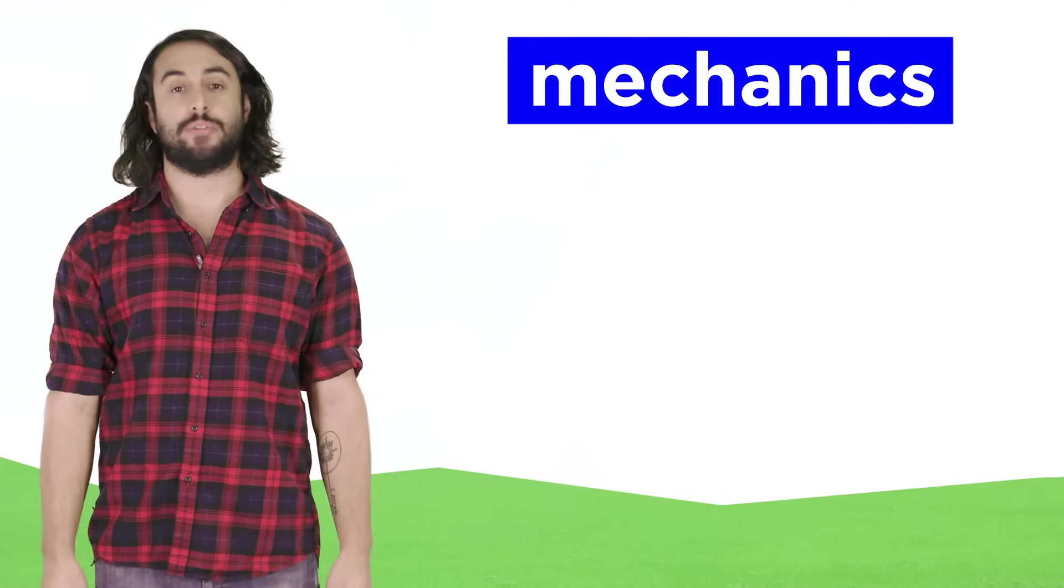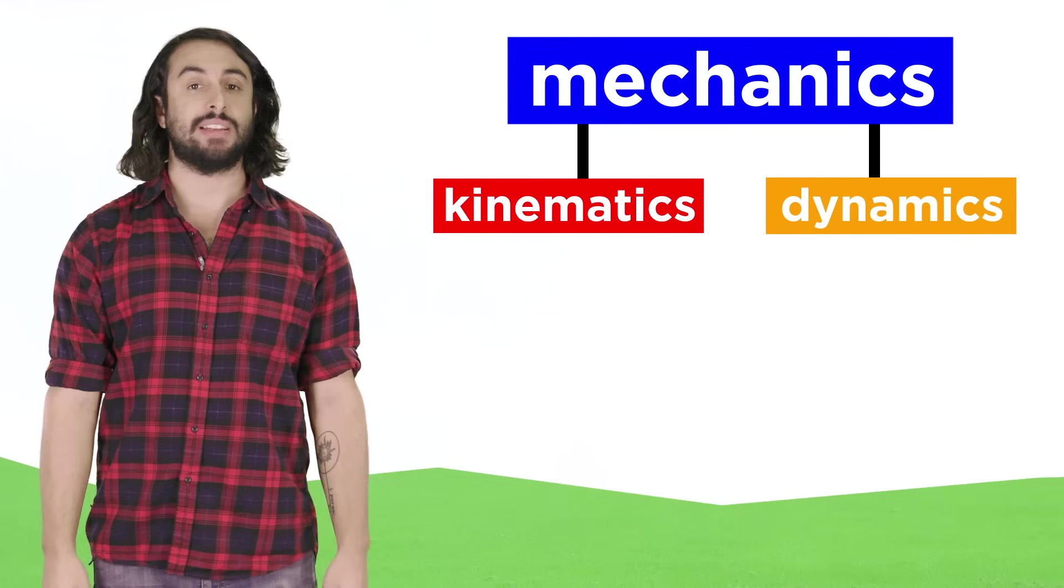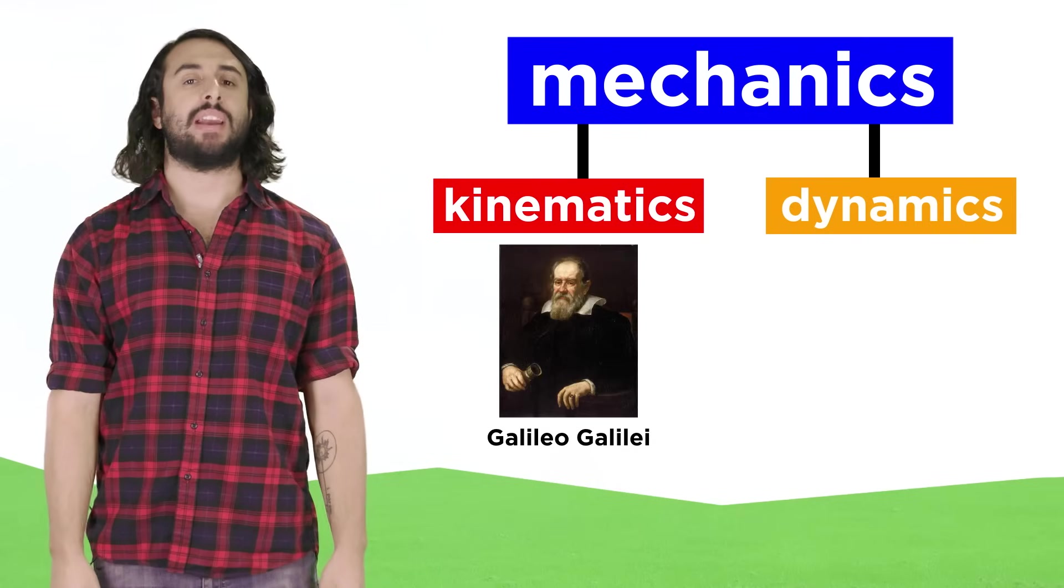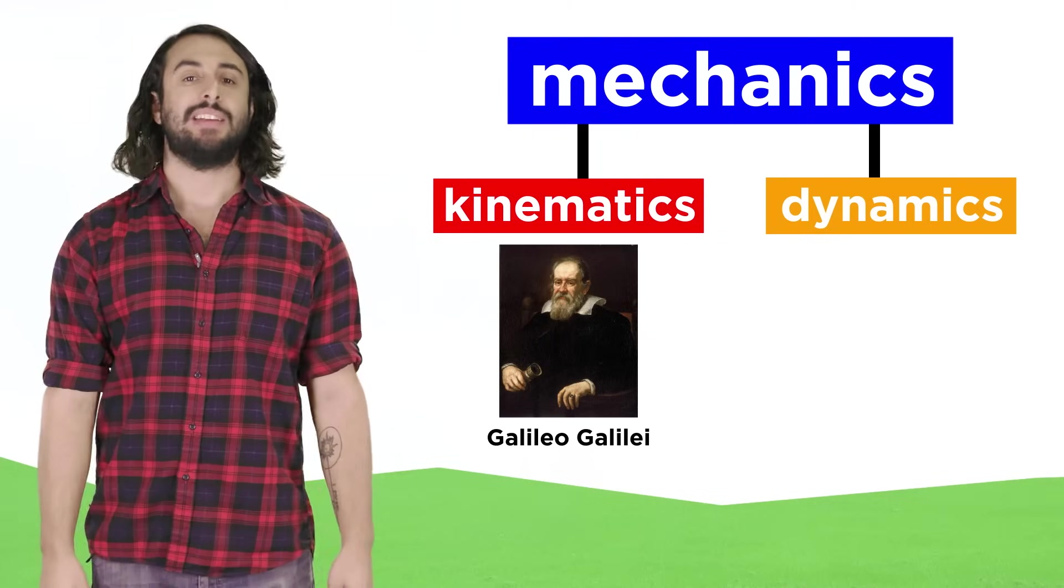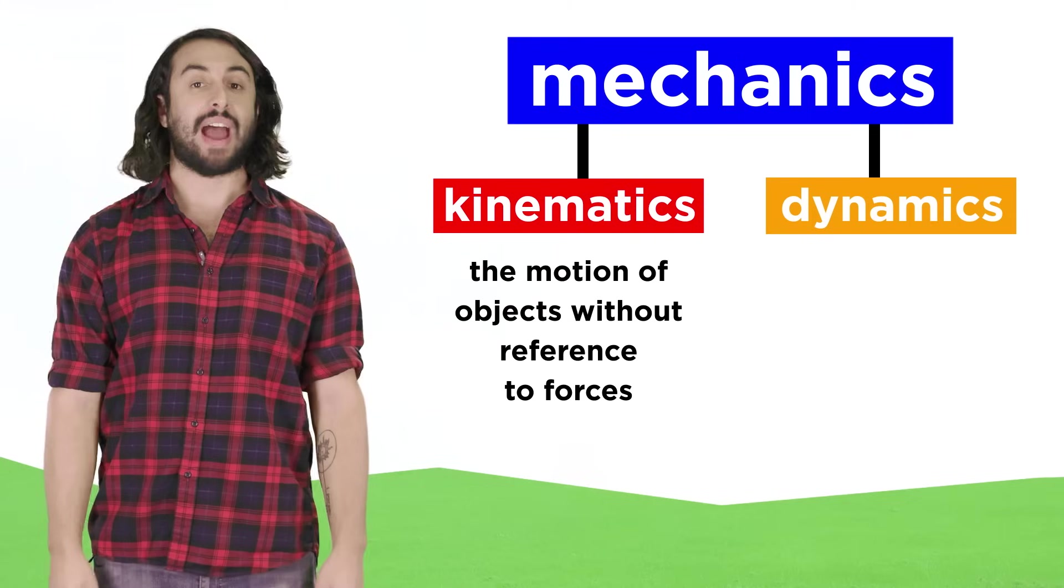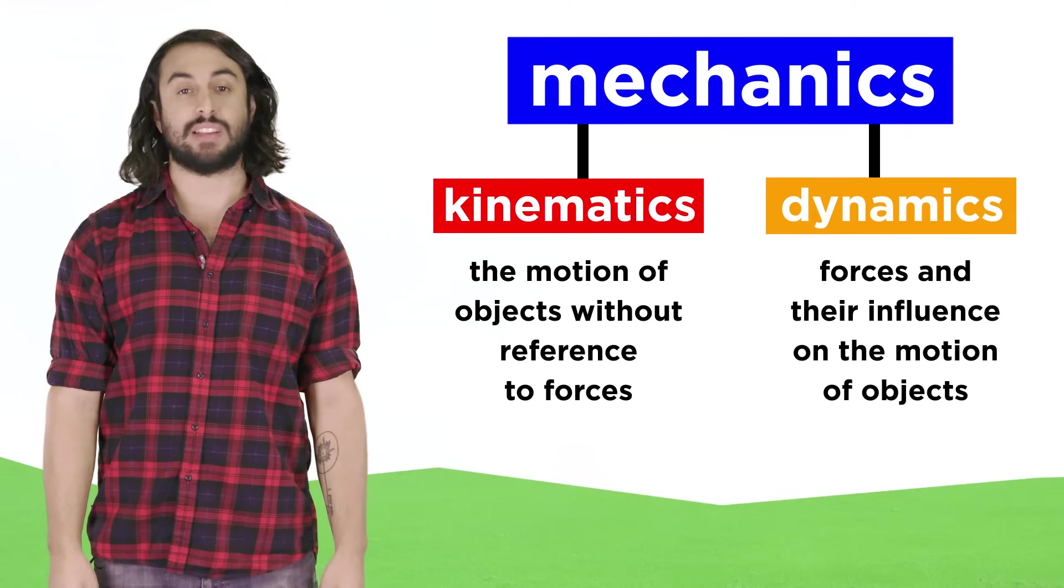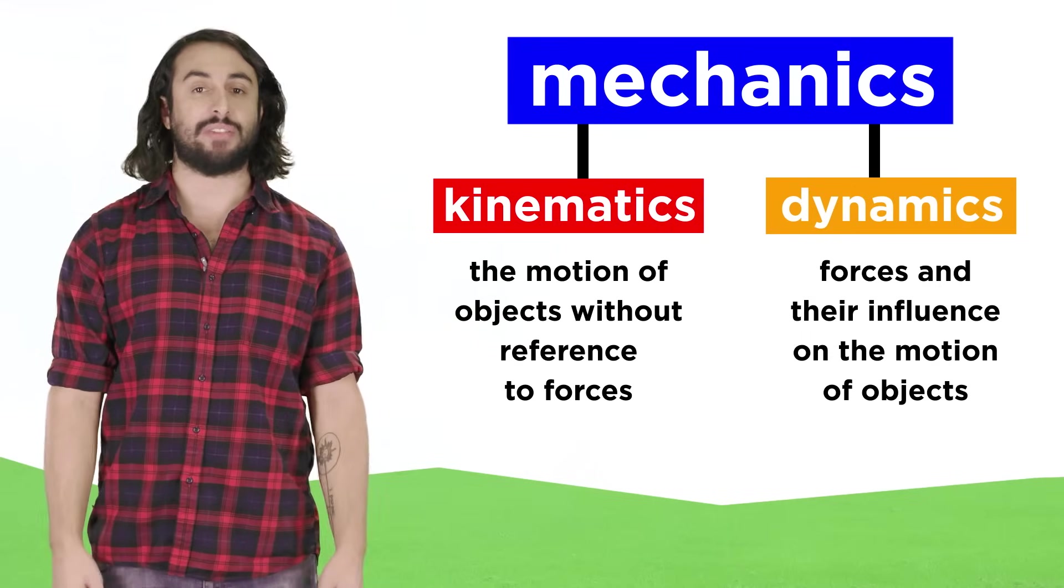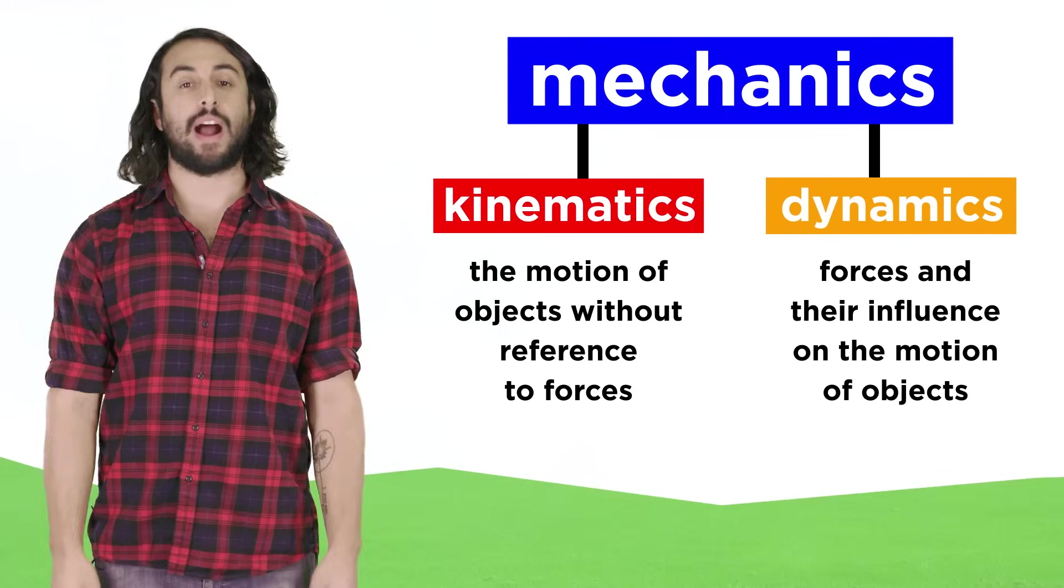This is a branch of physics that can be divided into two smaller topics, kinematics and dynamics. Kinematics, which was developed largely by Galileo in the early 1600s, deals with equations that describe the motion of objects without reference to forces of any kind, whereas dynamics is the study of the effect that forces have on the motion of objects. These topics together comprise mechanics.